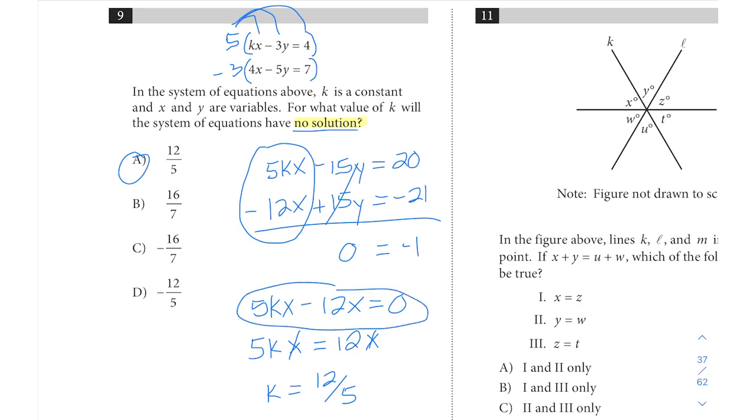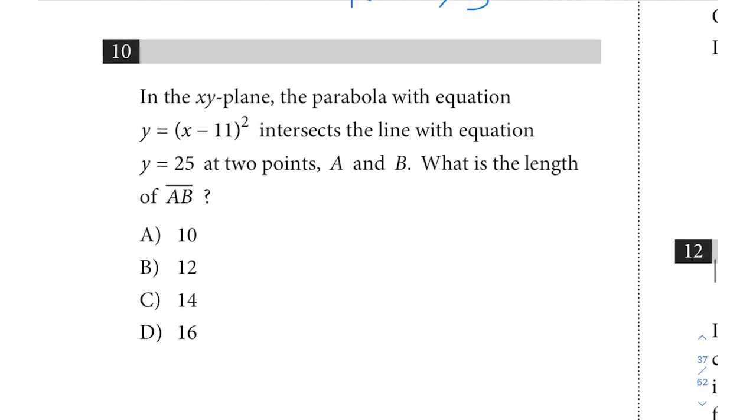We can use that to create this equation here and solve for k. Up next, let's take a look at question 10. Here it says: In the xy-plane, the parabola with equation y equals (x minus 11) quantity squared intersects the line with equation y equals 25 at two points A and B. What is the length of AB?